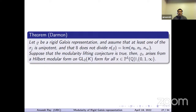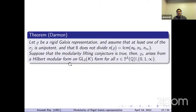Here is the theorem of Darmon. It says that if rho is a rigid Galois representation such that at least one of the matrices sigma_j is unipotent, and if P does not divide N — the LCM of n_0, n_1, n_infinity — then all specializations away from 0, 1, infinity arise from Hilbert modular forms on GL_2(K). This assumes the modularity lifting conjecture. Essentially, all the residue representations in the family are modular.